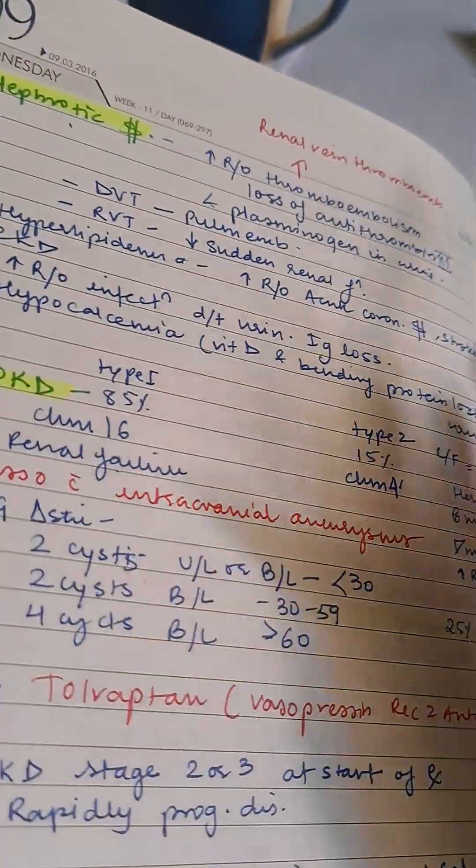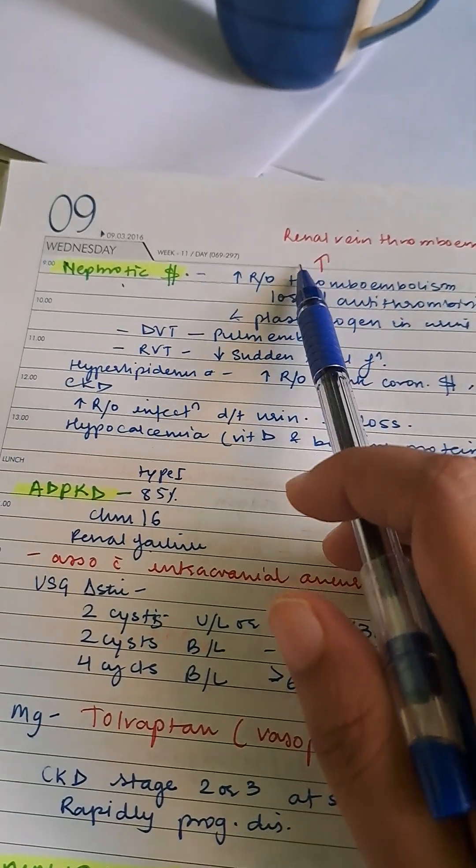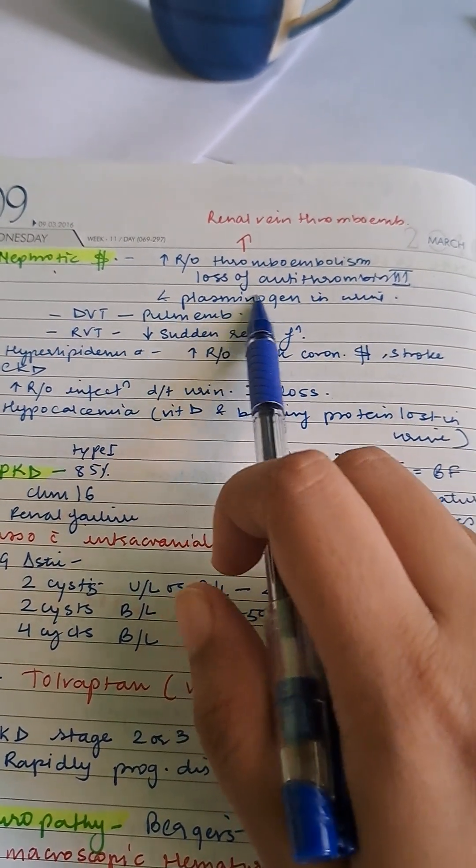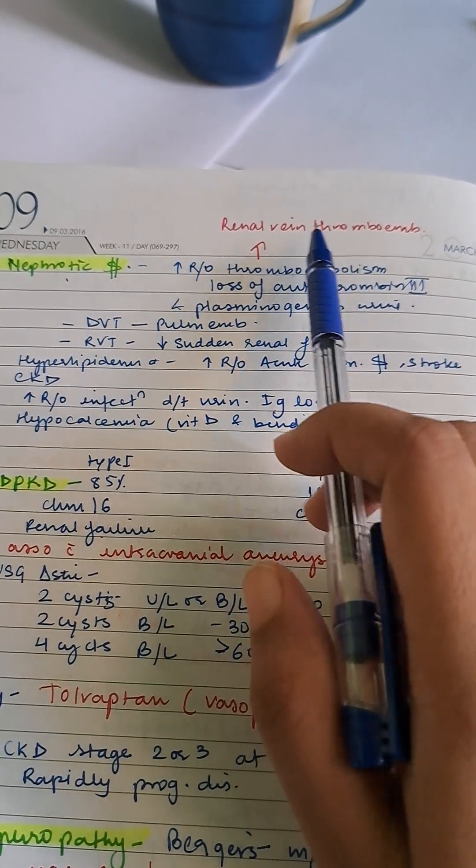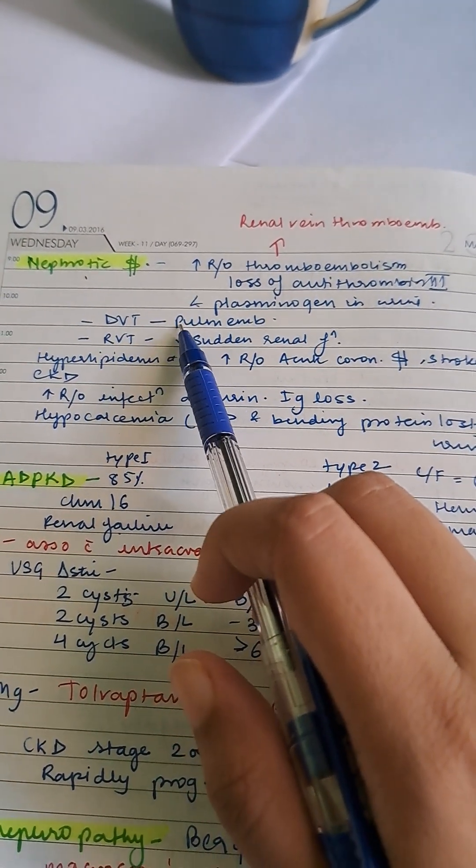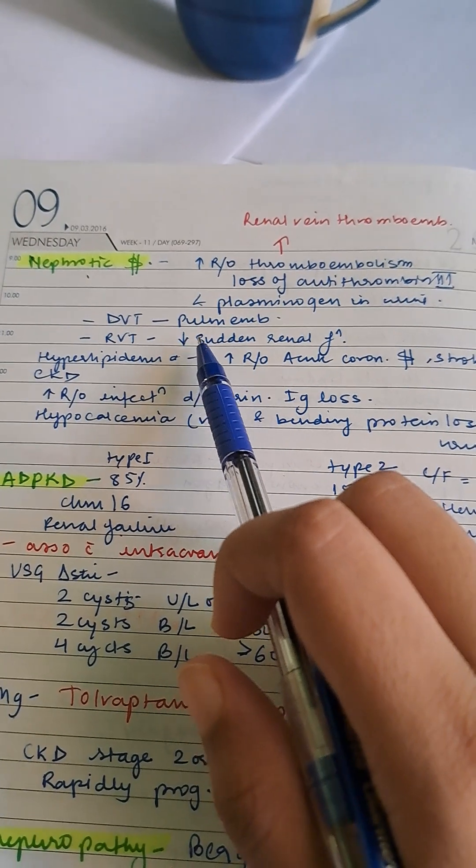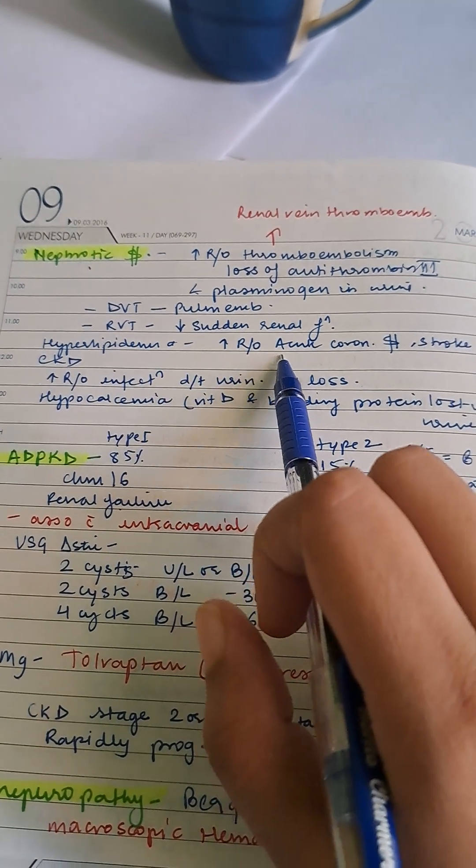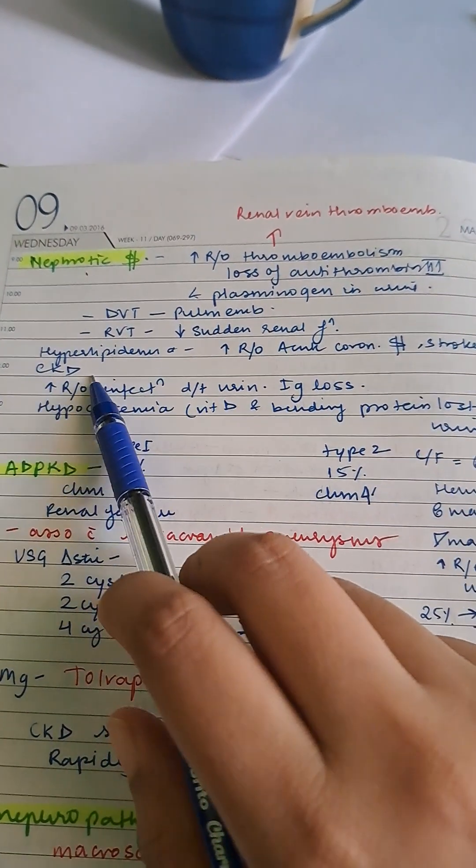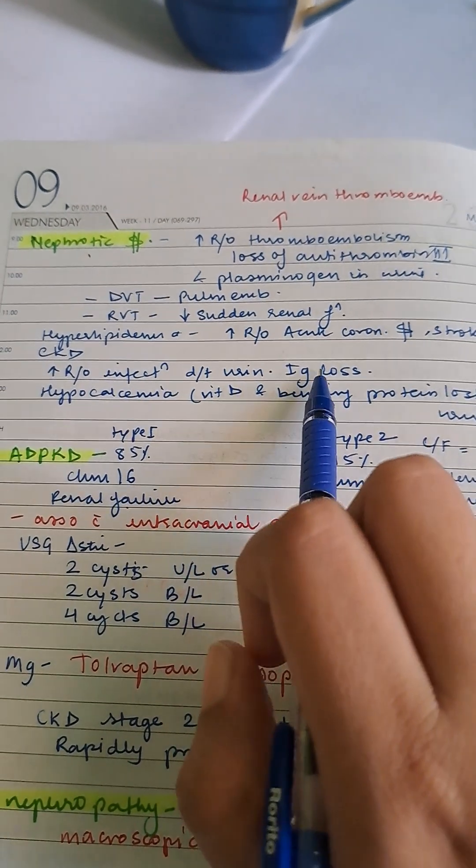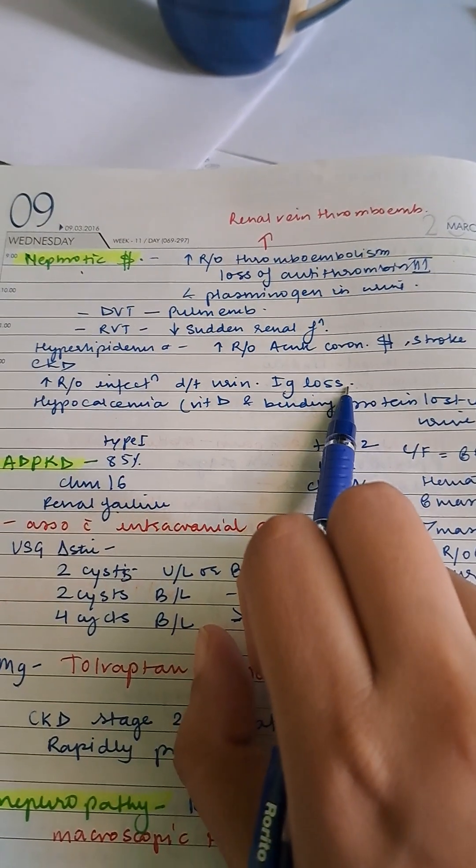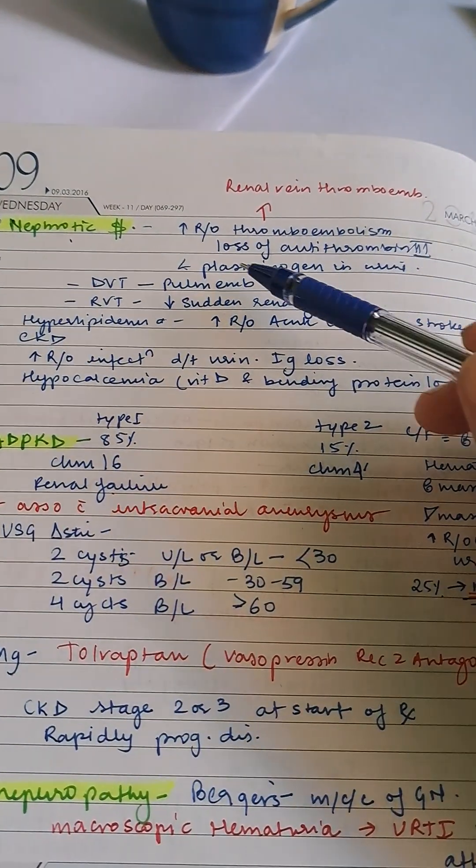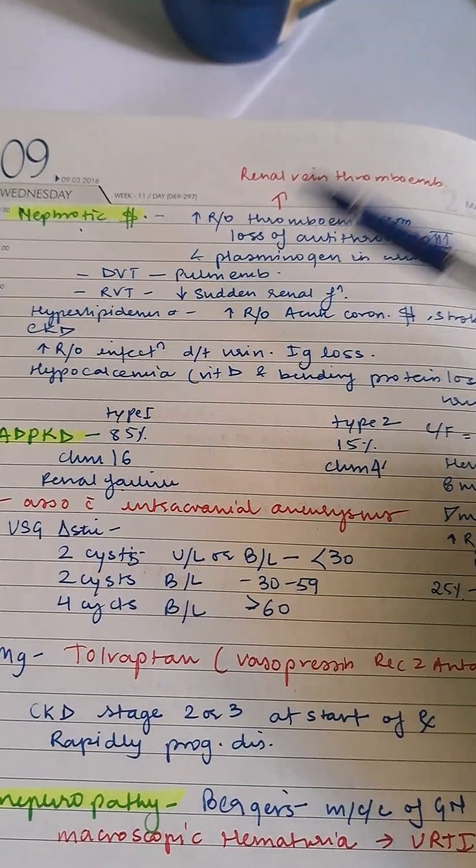Nephrotic syndrome has increased risk of thromboembolism and loss of antithrombin due to loss of antithrombin 3 and plasminogen in urine, causing renal vein thromboembolism, DVT, and pulmonary embolism. RVT causes sudden decrease in renal function. Hyperlipidemia increases risk of acute coronary syndrome and stroke. CKD can occur. Increased risk of infection due to urine immunoglobulin loss. Hypocalcemia occurs from vitamin D binding protein lost in urine.